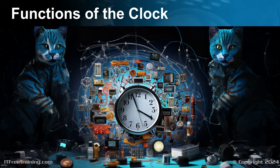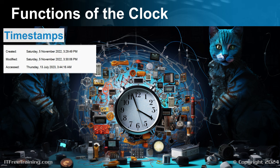For example, the clock is used for timestamps. Timestamps are used when creating a file. The modification timestamp is generally updated when the data in the file is changed. However, different operating systems may also change it at other times, for example when permissions are changed. When the accessed timestamp is updated, it is very operating system specific.